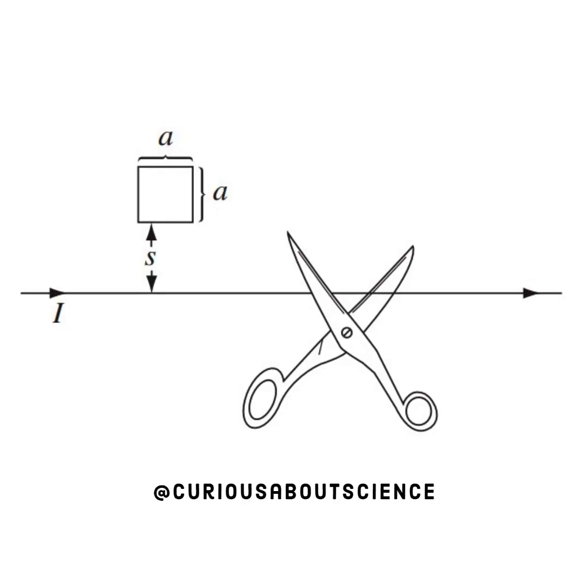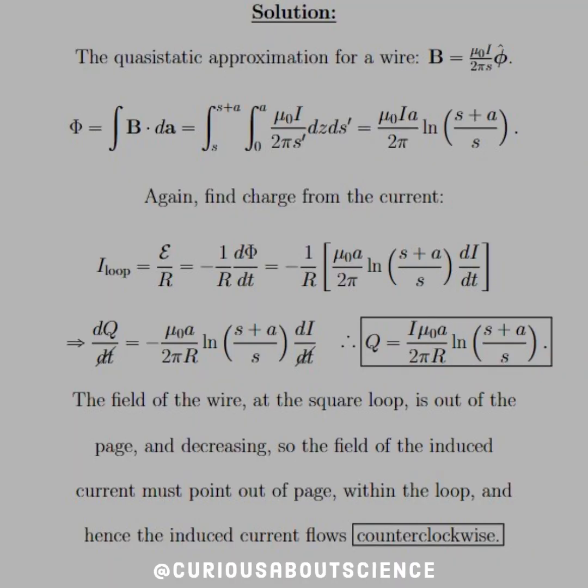Like our diagram suggests, we have a square loop, length A and A, some distance S above a current carrying wire. We know that the quasi-static approximation for this is just that of the magnetic field of the wire, which is mu naught I over 2 pi S in the phi hat direction.